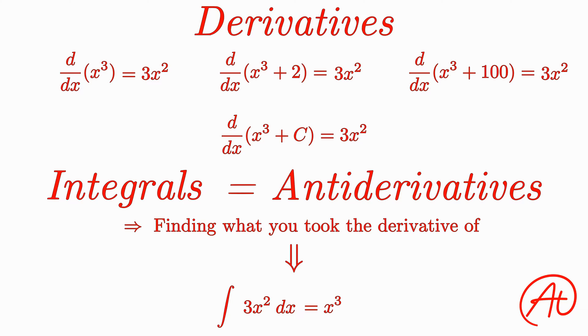To account for this possibility of the original function having an additional constant, when we take the integral of something, we need to add in that potential constant by tacking on plus some arbitrary c value. This value could end up being 0, but we just don't know without any additional information. So we just leave it as an unknown c.